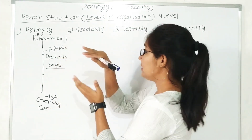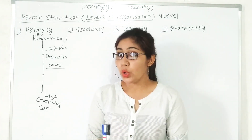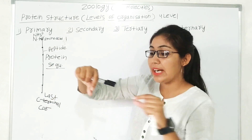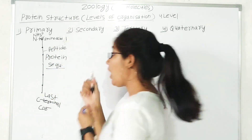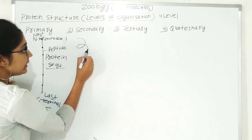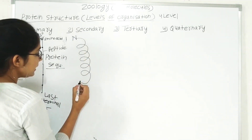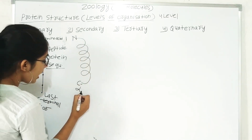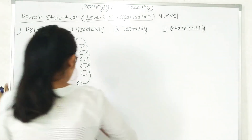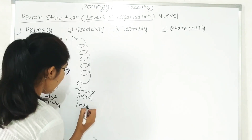Now, how is the secondary structure formed? When the primary structure folds on itself, it forms a secondary structure. The primary structure — a thread-like structure — can fold into a helix-like structure. This is known as the alpha helix, which is a spiral structure. The N-terminal is at one end and the C-terminal at the other. This alpha helix is formed due to hydrogen bonds.